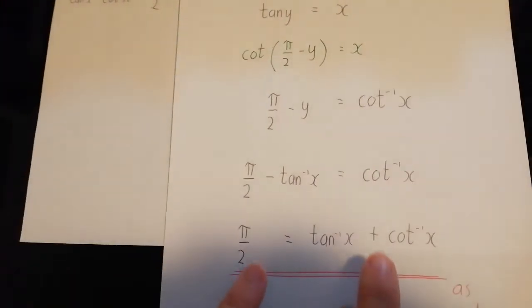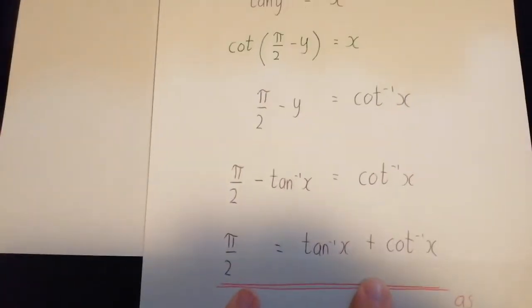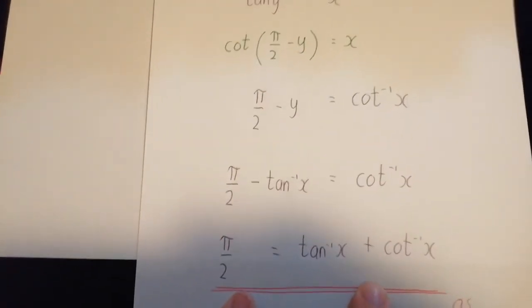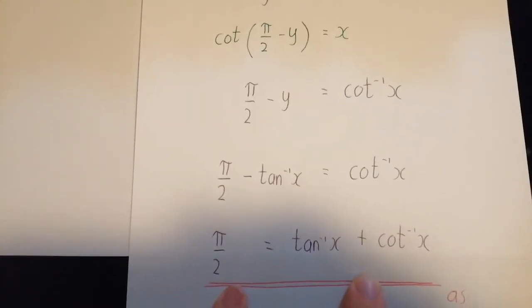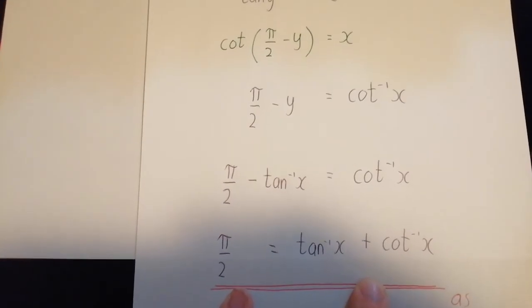A simple bit of rearranging and hey presto, you've got it down to the identity which we wanted to prove. Arctan plus arccot is equivalent to π/2 radians.